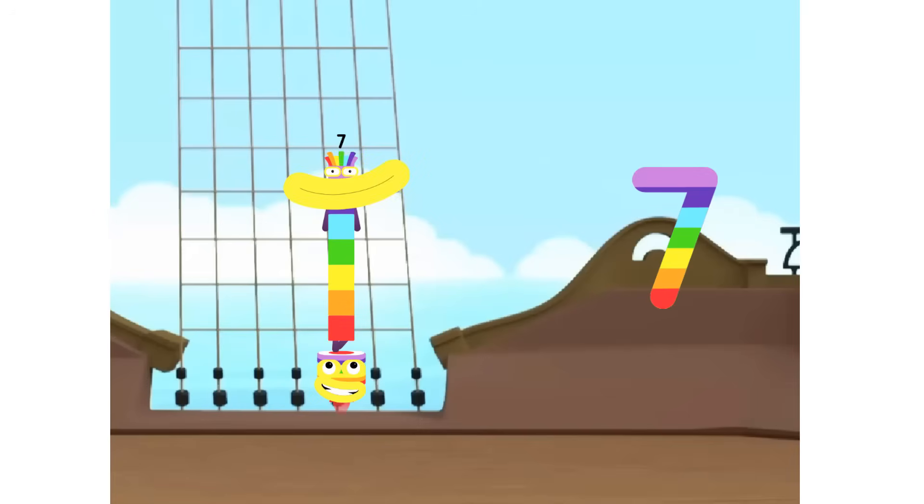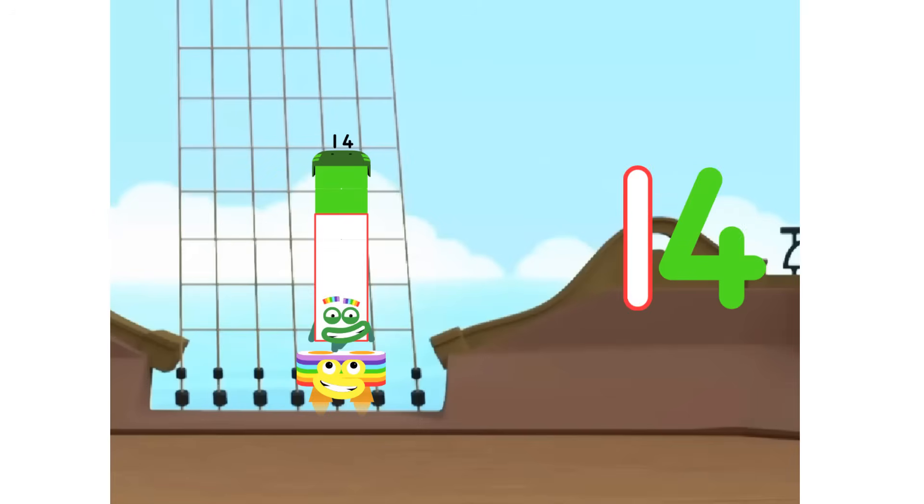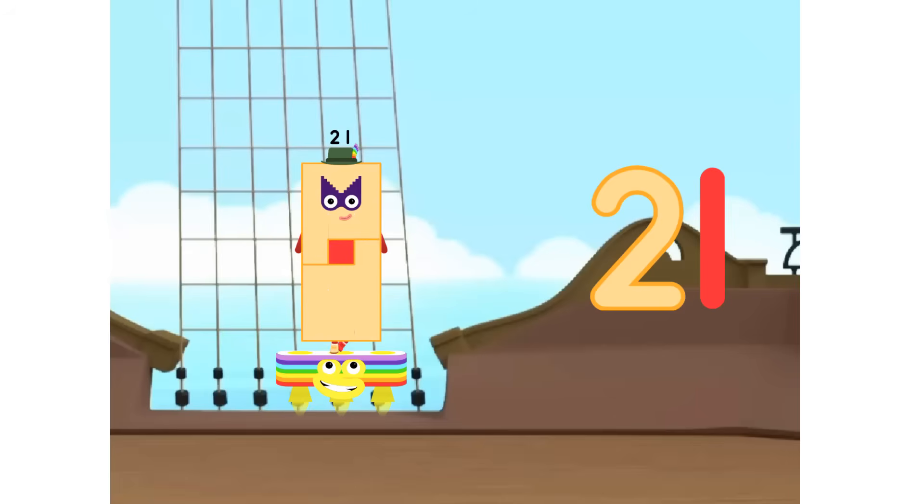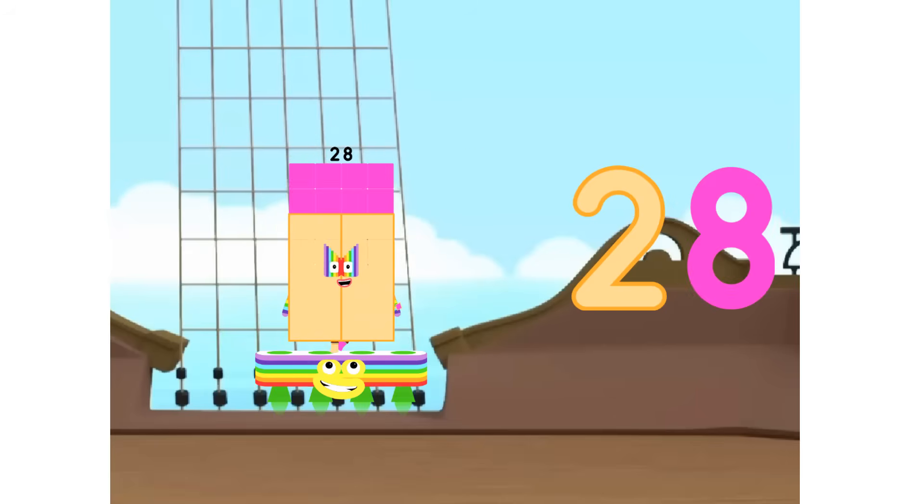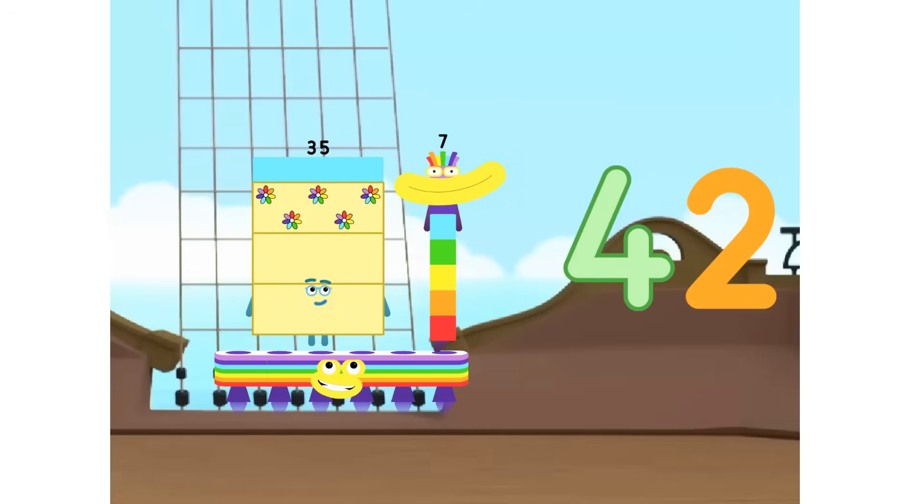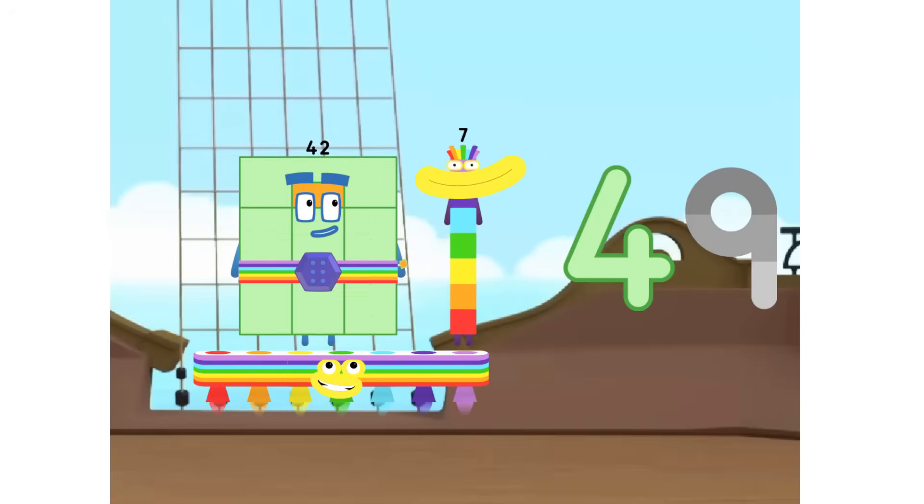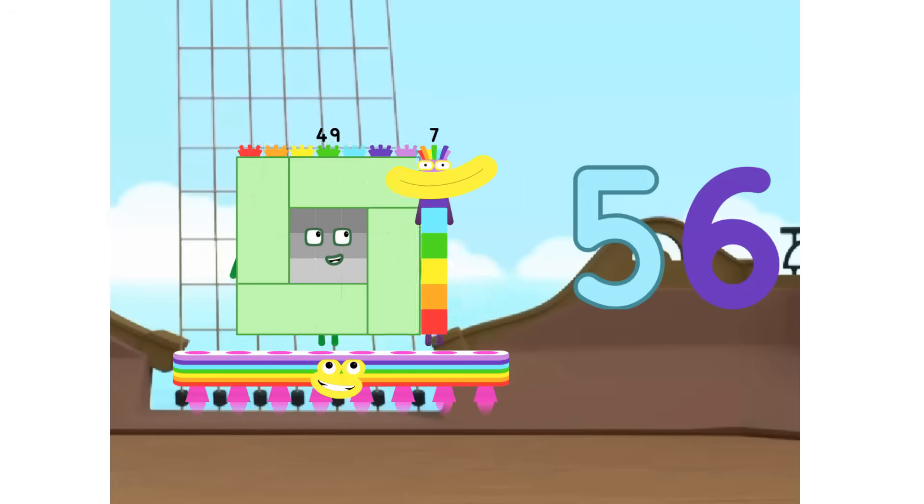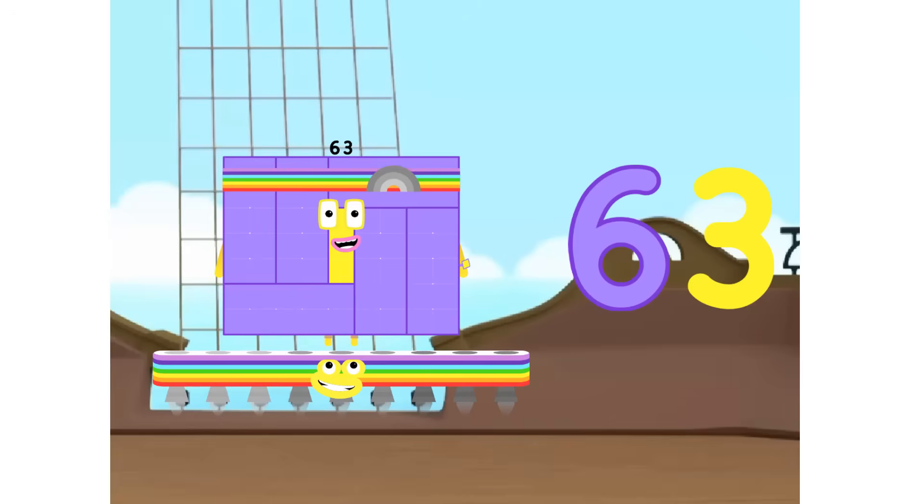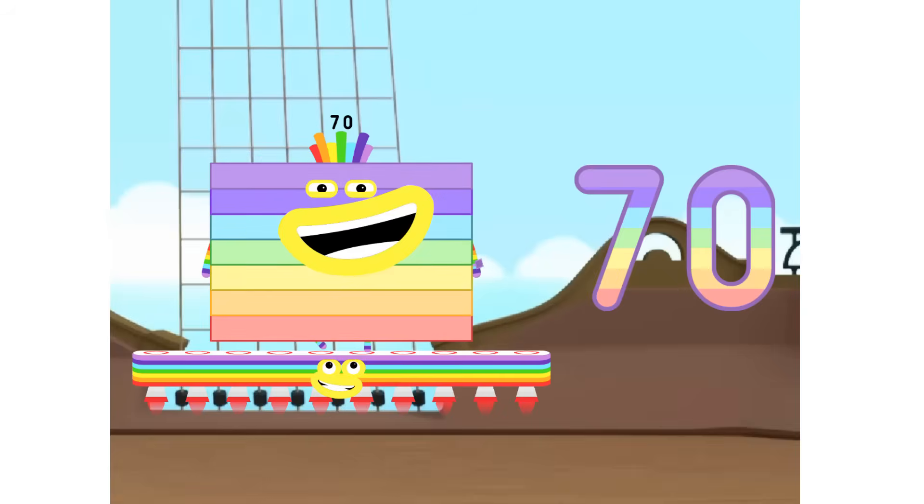1 7 is 7. 2 7s are 14. 3 7s are 21. 4 7s are 28. 5 7s are 35. 6 7s are 42. 7 7s are 49. 8 7s are 56. 9 7s are 63. 10 7s are 70.